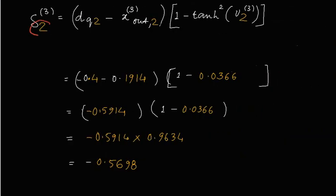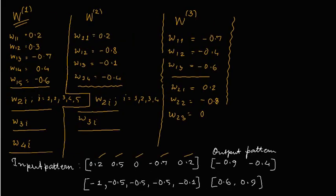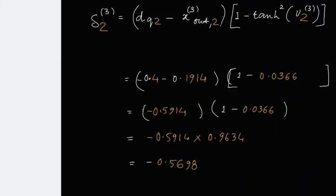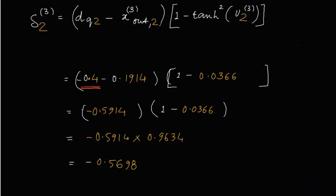Similarly, the second local error at the third layer can be calculated with this formula where the corresponding values are substituted. The desired output is 0.4, which is the second desired output we have seen here. We substitute minus 0.4 and this is the value we are getting at the output of the neural network. We get these two terms and then we get delta 2 superscript 3, the second local error at the third layer.